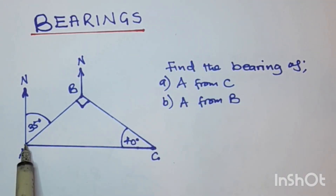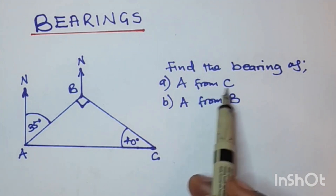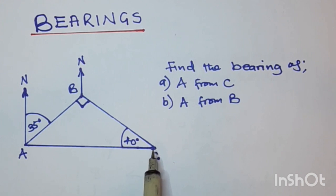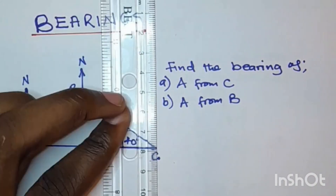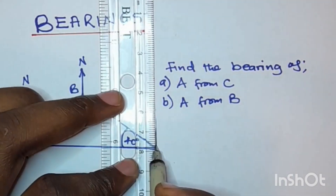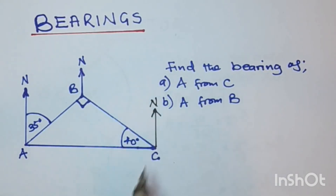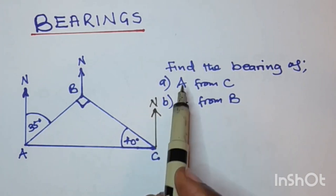They want you to find the bearing of A whilst standing at C. That's what it means when they say 'A from C' — it means find the bearing of A whilst you are standing at C. At the point where you are standing, you need to draw a north, like this.